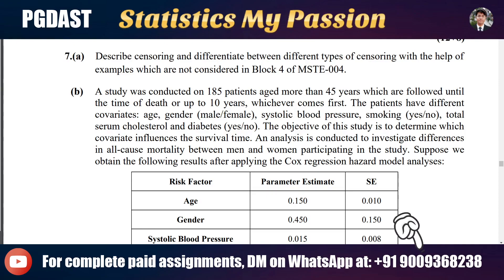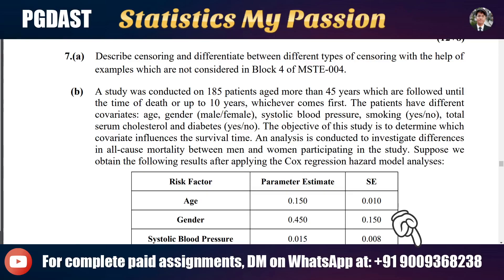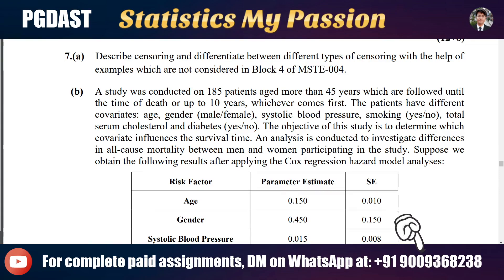The second part of question 7 involves a study conducted on 185 patients aged more than 45 years, followed until the time of death or up to 10 years, whichever comes first. The patients have different covariates: age, gender, systolic blood pressure, smoking, total serum cholesterol, and diabetes. The objective is to determine which covariates influence survival time, and to investigate differences in all-cause mortality between men and women.